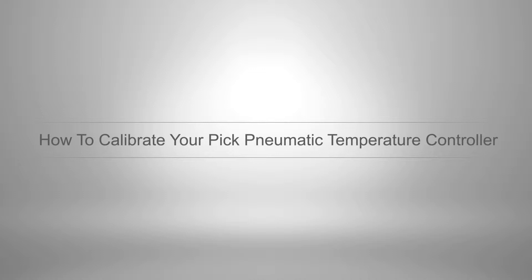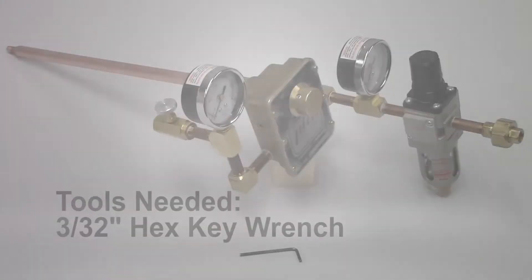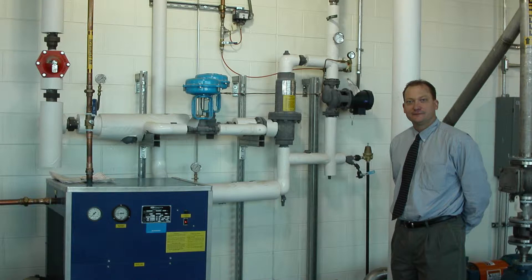This video will show you how to calibrate your pick pneumatic temperature controller. For calibration, the only tool needed is a 3/32 inch hex key wrench. To perform the controller calibration, make sure your pick heater is ready to operate.